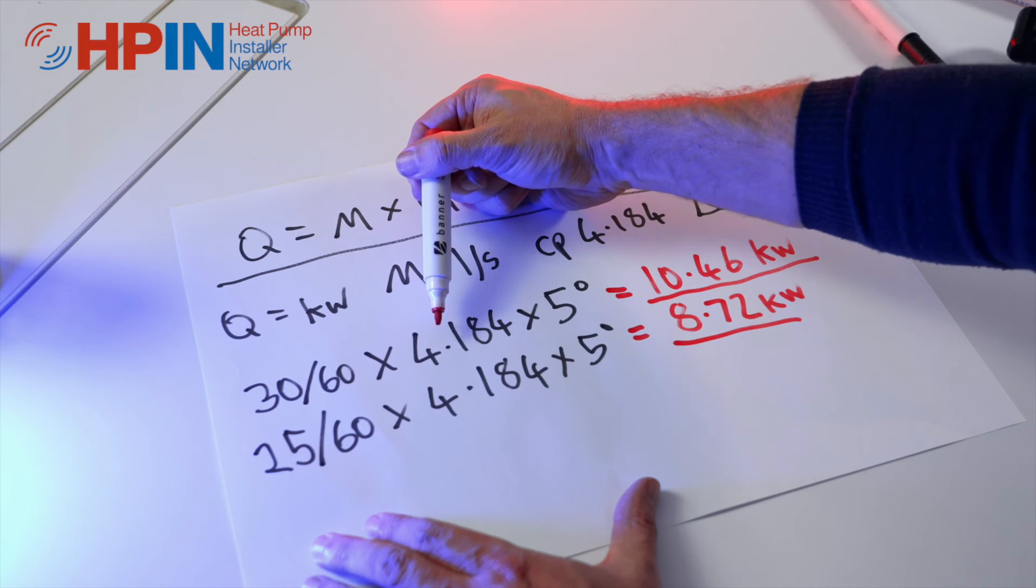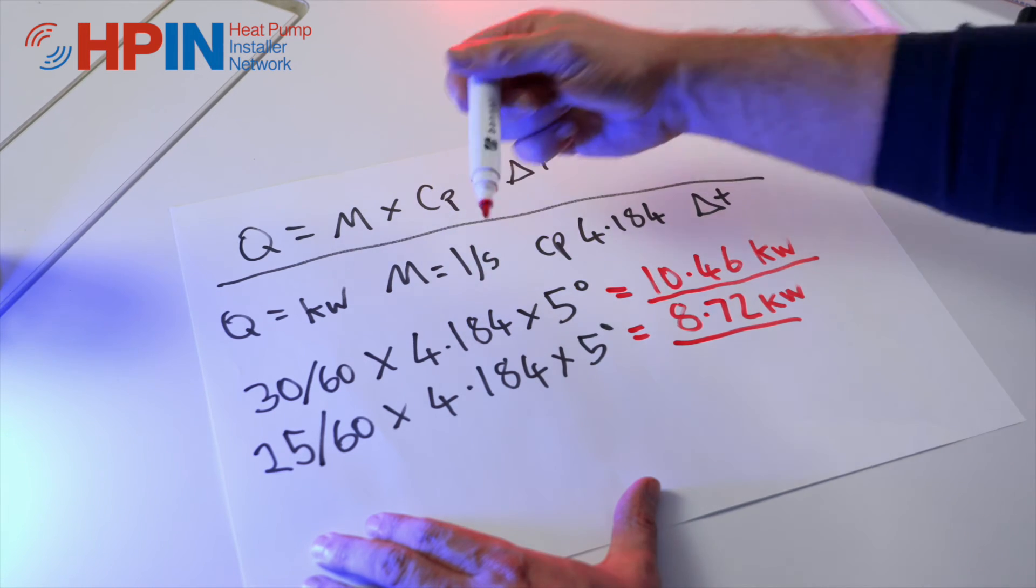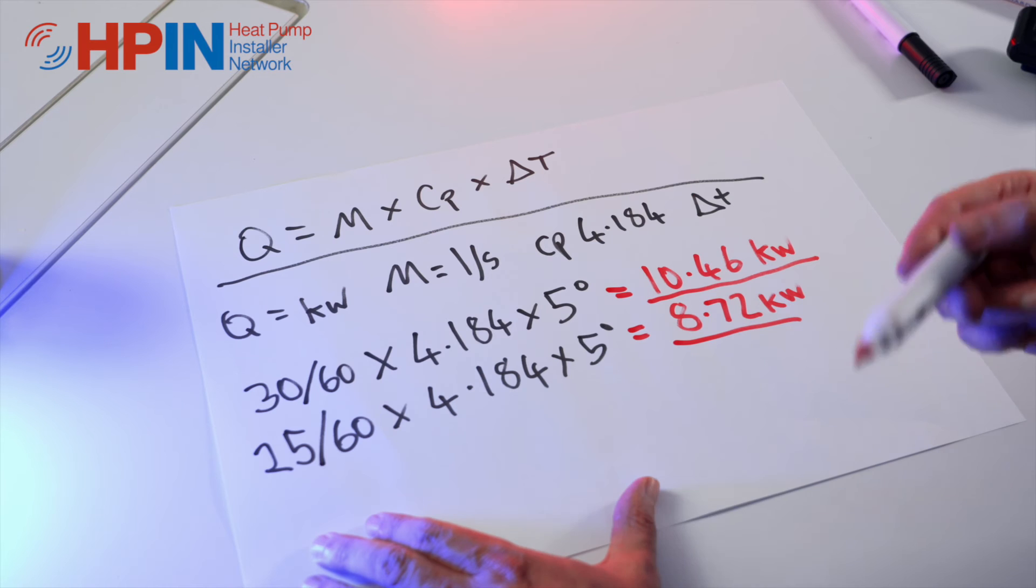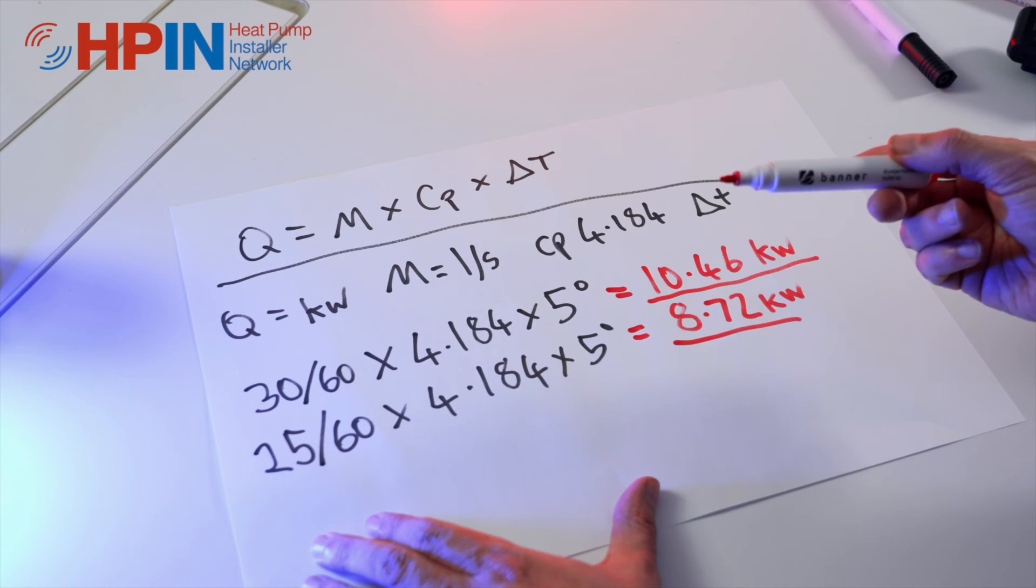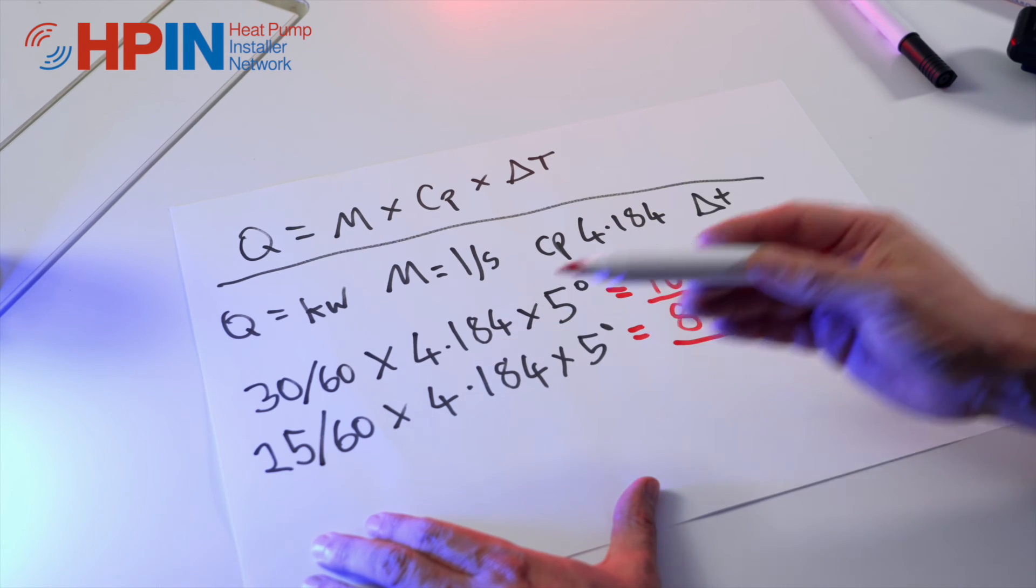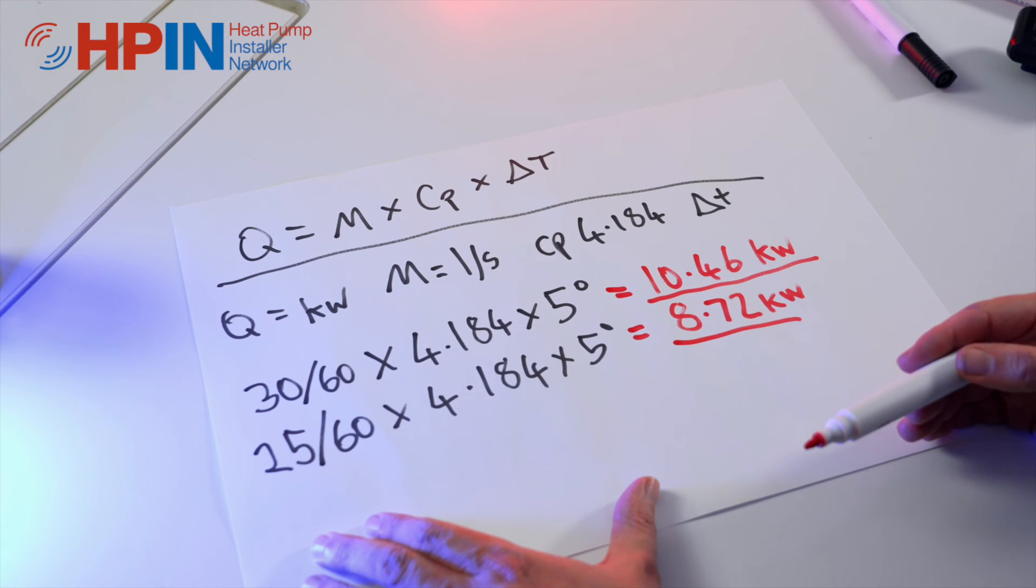We've got our water 4.184. If I was to add glycol to the system, and if you watch one of our other videos you can see why we don't use glycol, it actually lowers this even further. So we get even less output at the end.